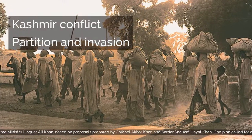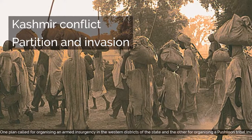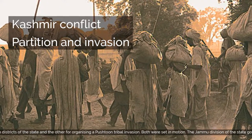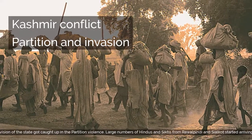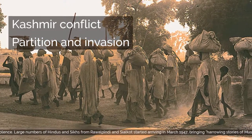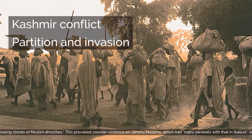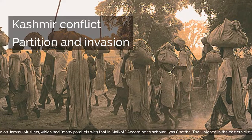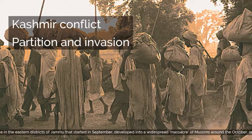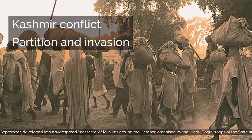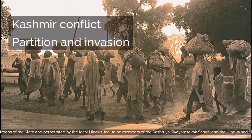The Jammu division of the state got caught up in the partition violence. Large numbers of Hindus and Sikhs from Rawalpindi and Sialkot started arriving in March 1947, bringing harrowing stories of Muslim atrocities. This provoked counter-violence on Jammu Muslims. According to scholar Ilyas Chattha, the violence in the eastern districts of Jammu that started in September developed into a widespread massacre of Muslims around October, organized by the Hindu Dogra troops of the state and perpetrated by local Hindus, including members of the Rashtriya Swayamsevak Sangh, and Hindus and Sikhs displaced from neighboring areas of West Pakistan. A large number of Muslims were killed, and huge numbers fled to West Pakistan, some making their way to the western districts of Punjab and Mirpur.